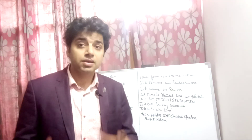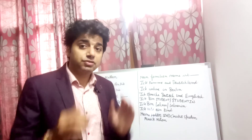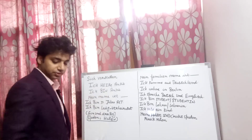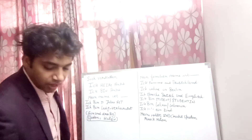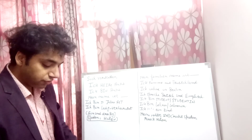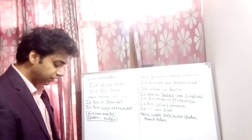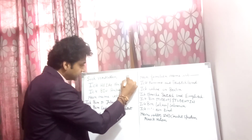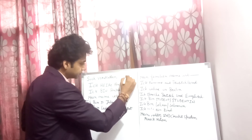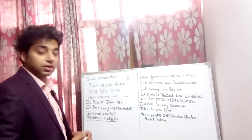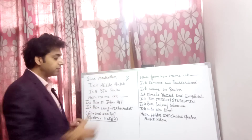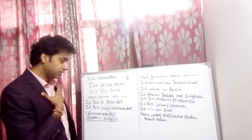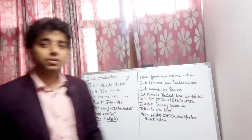In German, there are a lot of ways to say 'my name is.' The first way is: 'Ich heiße Ankit.' We have a beta sign (ß) in German — it is called a double-S sound. So 'Ich heiße' means 'my name is Ankit.'